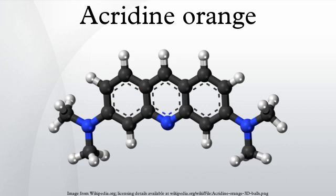Acridine orange will also enter acidic compartments such as lysosomes and become protonated and sequestered. In these low pH conditions, the dye will emit orange light when excited by blue light. Thus, acridine orange can be used to identify engulfed apoptotic cells, because it will fluoresce upon engulfment.